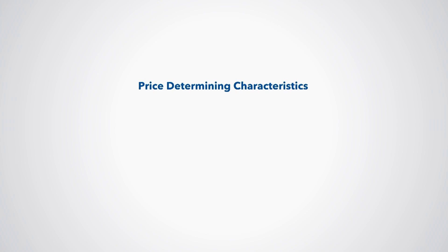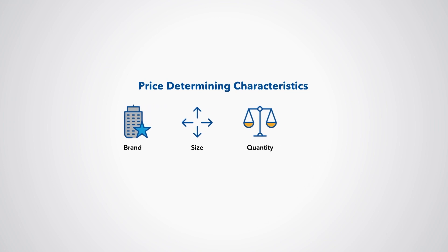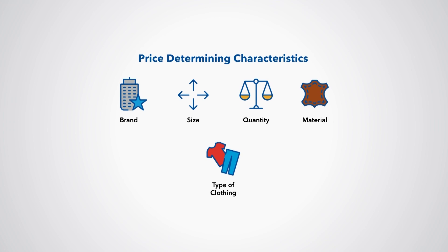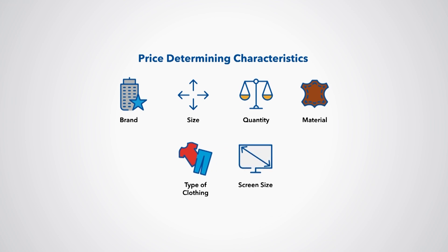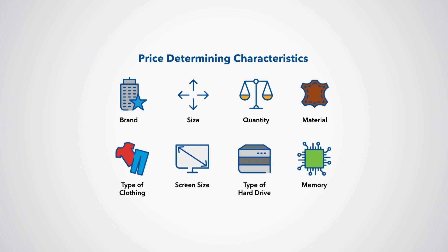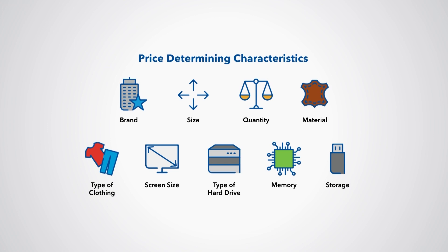Examples of price-determining characteristics include brand; size such as 400 grams, 1 liter, 5 kilograms; quantity such as single unit, case of 12, pack of 6, 100 tablets, or one dozen; material such as cotton, linen, wool, silk; type of clothing such as men's dress shirt, women's skirt, boys' school uniform; screen size such as a 15-inch laptop screen or 75-inch TV screen; type of hard drive such as solid state or standard; memory such as 8 gigabytes or 16 gigabytes; and storage such as 512 gigabytes or 1 terabyte.